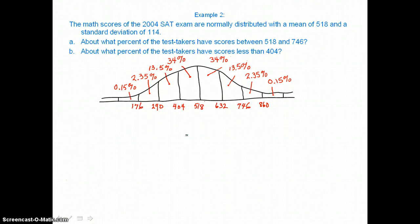Okay, now let's answer the question about what percent of the test takers have scores between 518 and 746. Well, that would include these areas between 518 and 746. So all we have to do is add 34% and 13.5% to get a total percent of 47.5%.